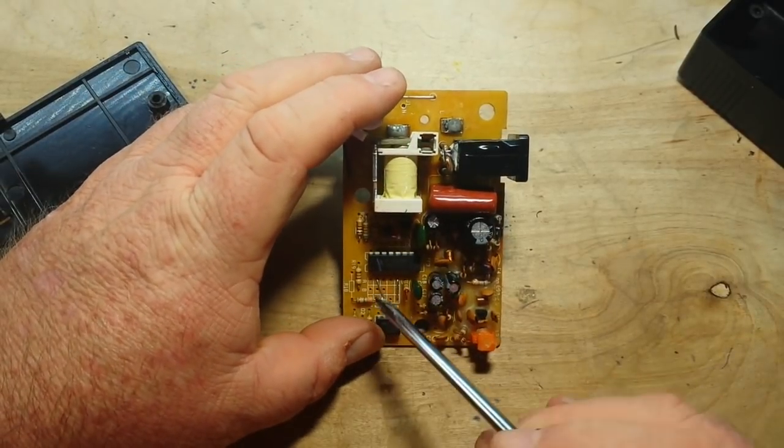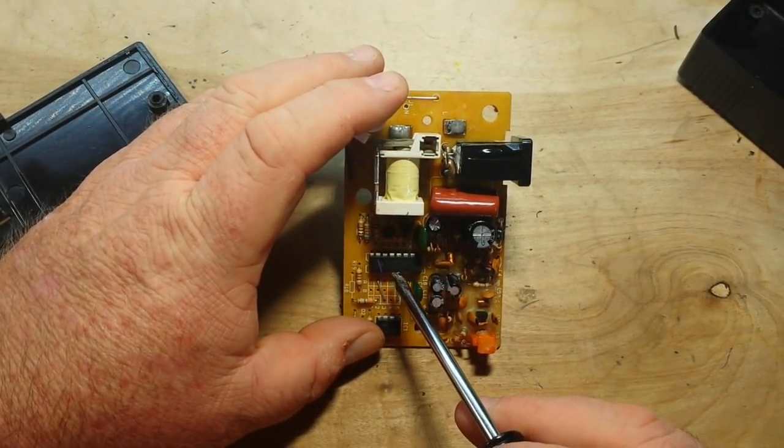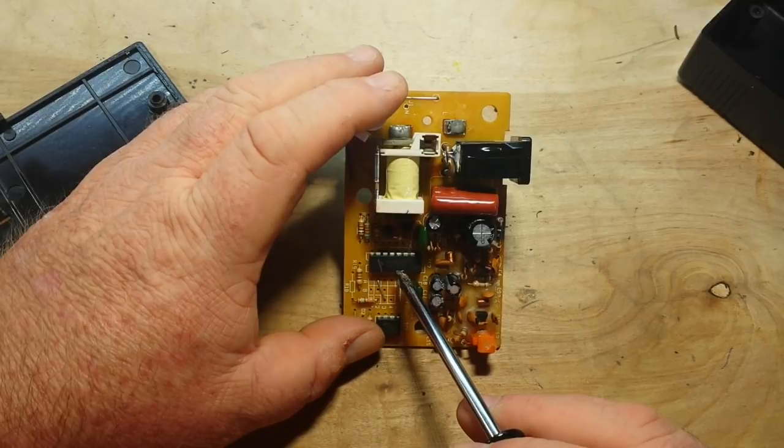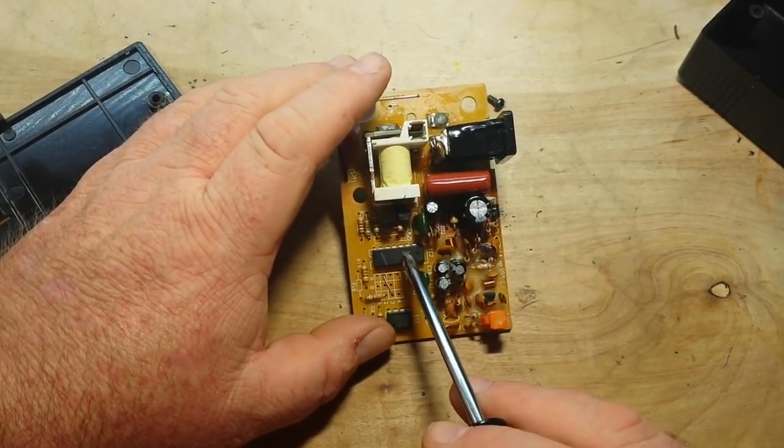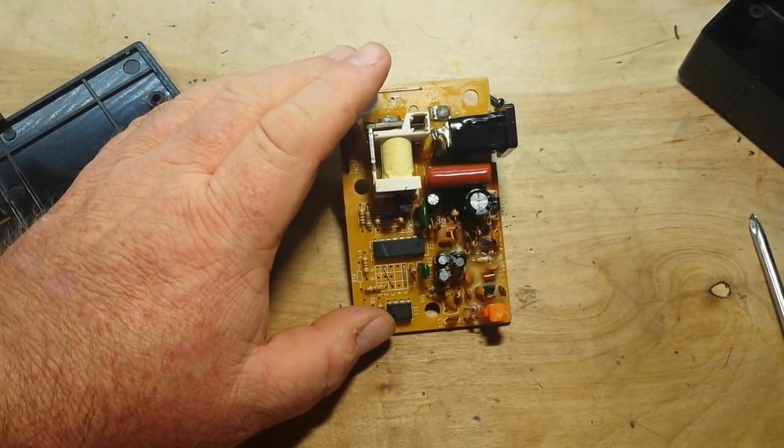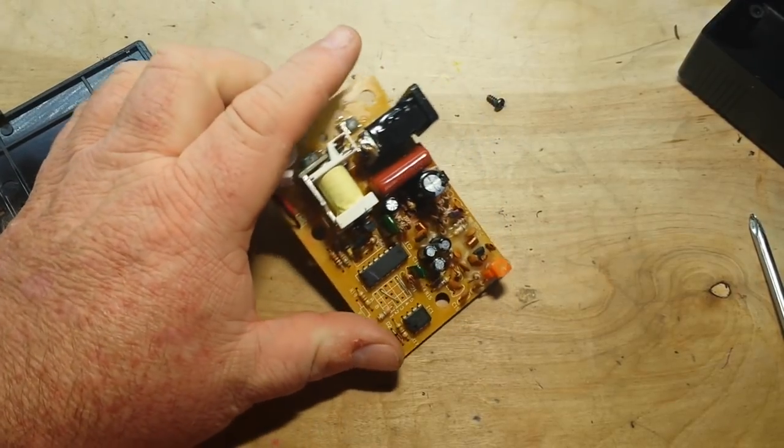This would be the MC145027. The other one was a 26, so that would be the other half of that encoder decoder pair. So that's nice.